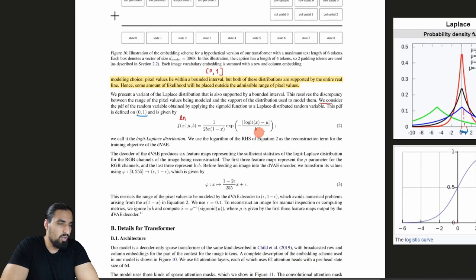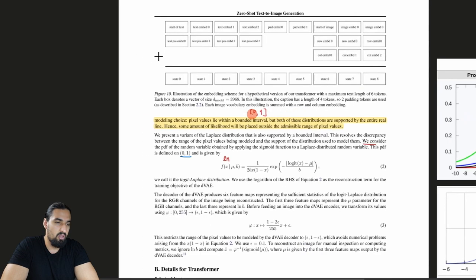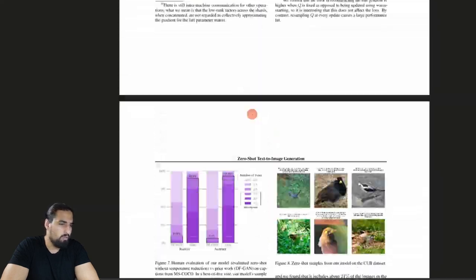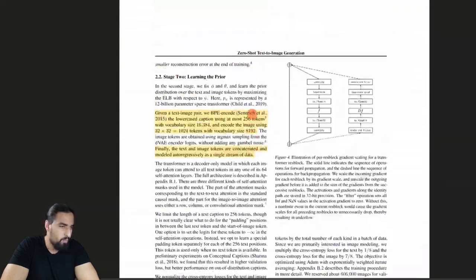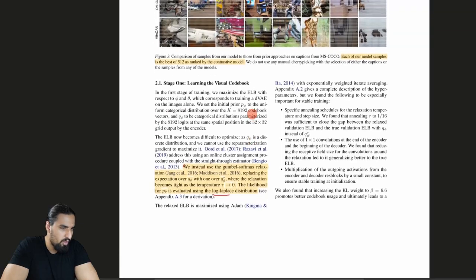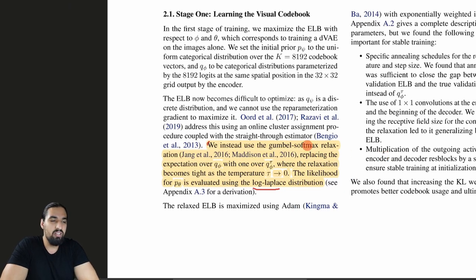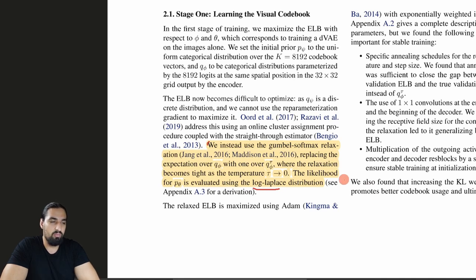That was a small glimpse into the details they changed compared to the original VQVAE paper. I'll skip the full explanation of the Gumbel Softmax relaxation — there's a whole paper behind this idea — but in a nutshell, they replaced the straight-through gradient estimator with this novel Gumbel Softmax relaxation method.